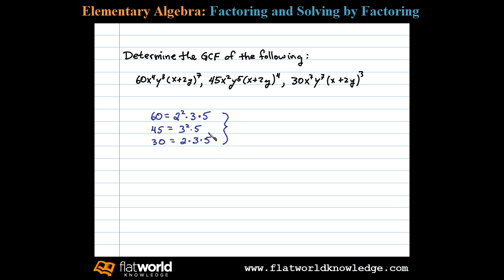Notice here we have five as a common factor and also three is a common factor. Therefore, the GCF of 60, 45, and 30 is equal to three times five or 15.